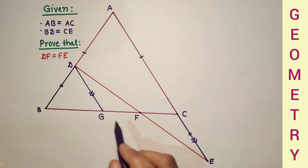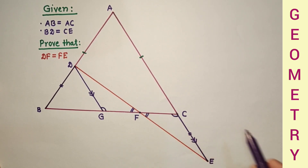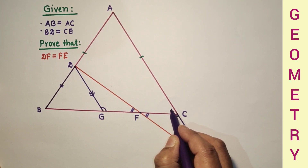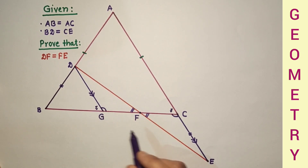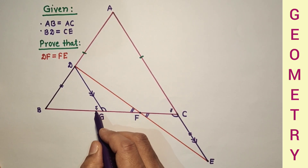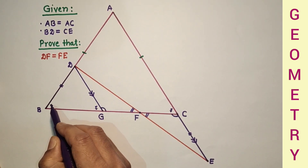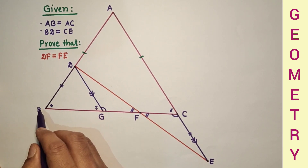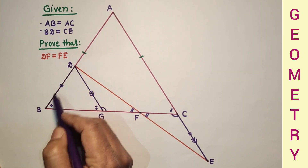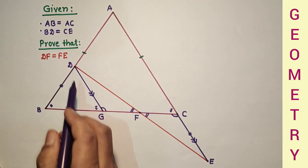Since DG is parallel to CE, this angle will be equal to this angle. These two are equal because of vertically opposite angles, and if this angle is equal to this, then their linear pair angles will also be correspondingly equal — for example, if one is 130°, the other is 50°. Since AB and AC are equal, the base angles are equal, so DB is equal to DG. But we are given that DB is equal to CE, and therefore DG is equal to CE.